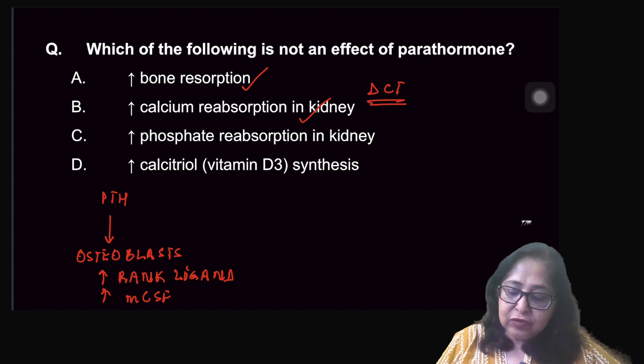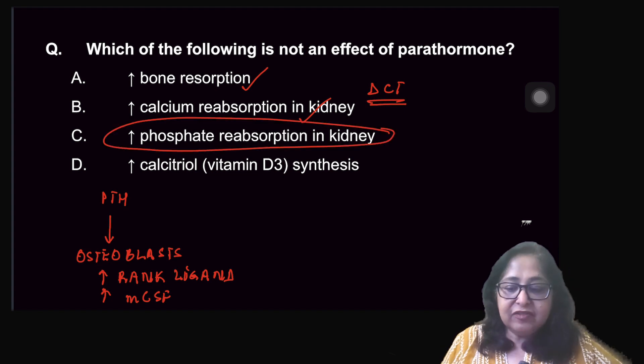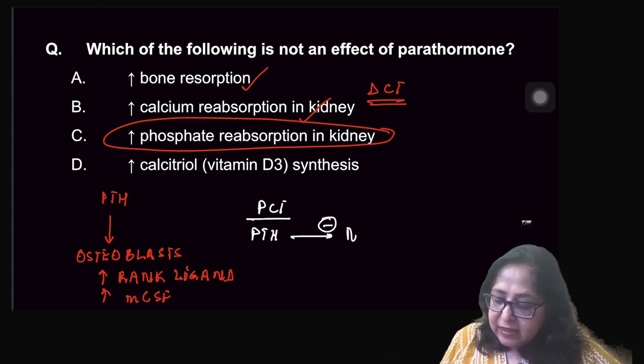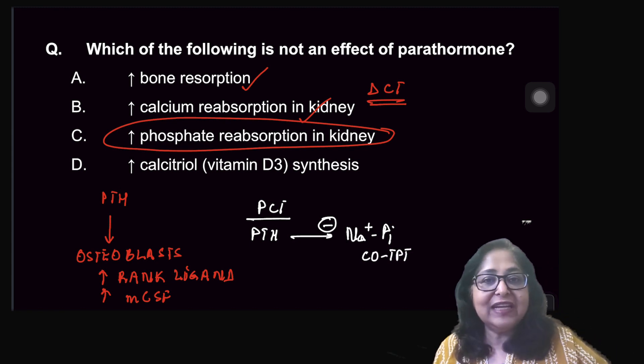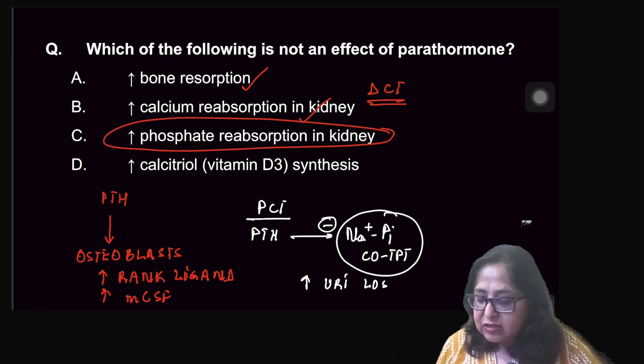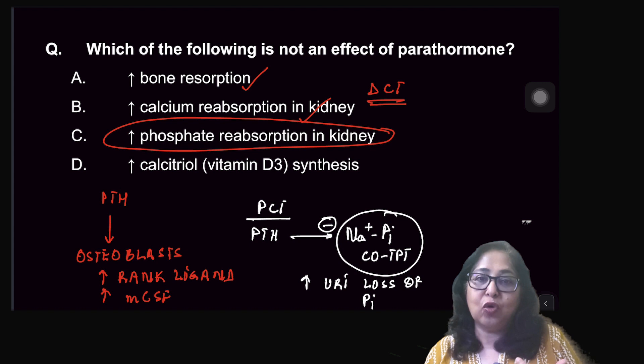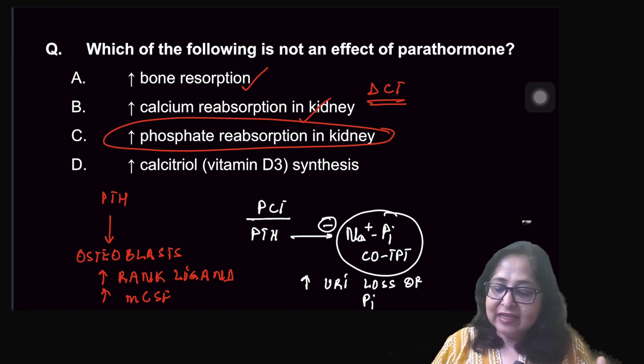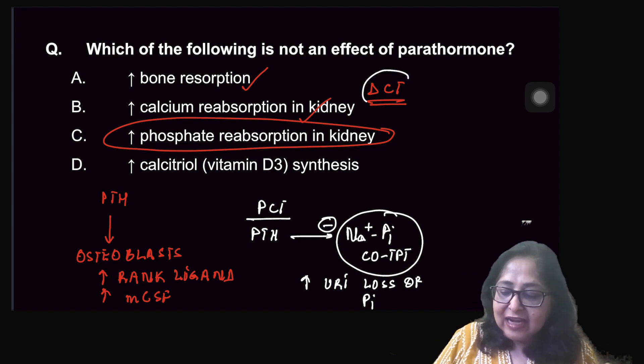Does it increase the phosphate reabsorption? This is false. What is the effect of parathormone on the PCT? In the PCT, parathormone inhibits the sodium inorganic phosphorus co-transport. Inorganic phosphorus and phosphate mean the same thing. So if it inhibits this sodium inorganic phosphorus co-transport, it increases the urinary loss of inorganic phosphorus which is called a phosphaturic action of parathormone. So parathormone reduces phosphate reabsorption. In the DCT, on the other hand, parathormone increases calcium reabsorption.